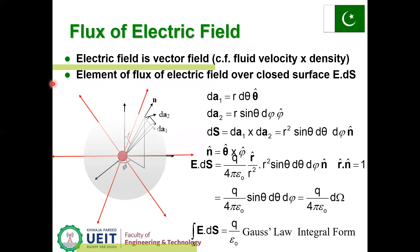Flux of electric field: the electric field is a vector field, analogous to fluid velocity due to density. The element of flux of electric field over a closed surface is E dot dS. dA₁ equals r d-theta times theta-hat. This figure shows that this angle is phi, and this is a patch on the sphere with elements dA₁ and dA₂ representing the length and breadth.